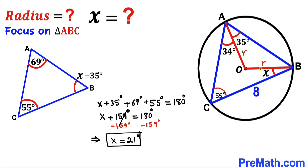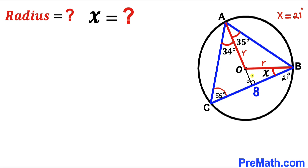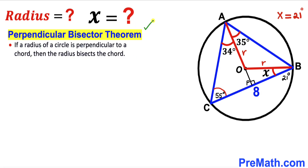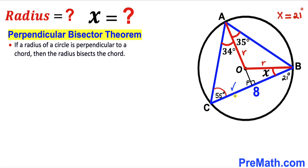So angle x turns out to be 21 degrees. For our next step, I have dropped a perpendicular OP on chord BC. Recalling the perpendicular bisector theorem — if a radius of a circle is perpendicular to a chord, then the radius bisects the chord — perpendicular OP bisects chord BC into two equal parts. Since BC is 8 units, segment CP is 4 units and segment PB is 4 units.